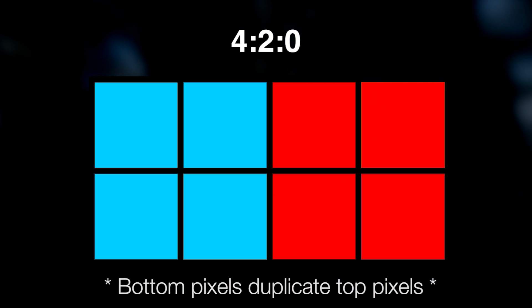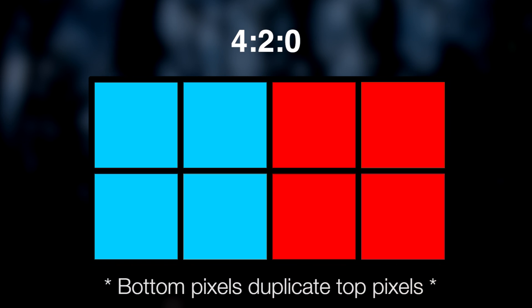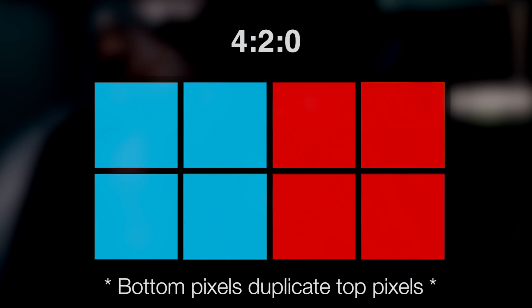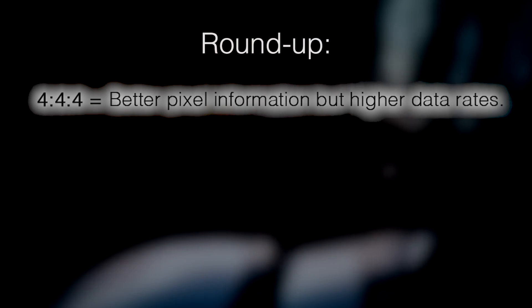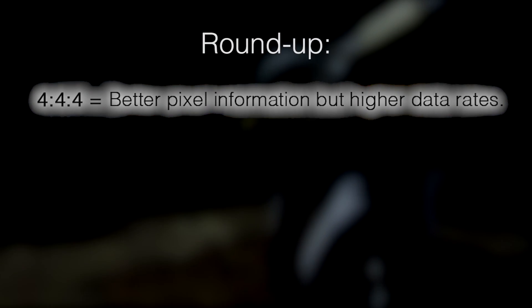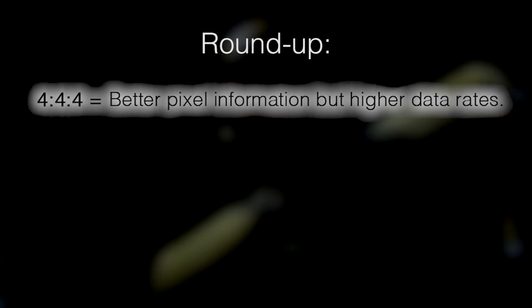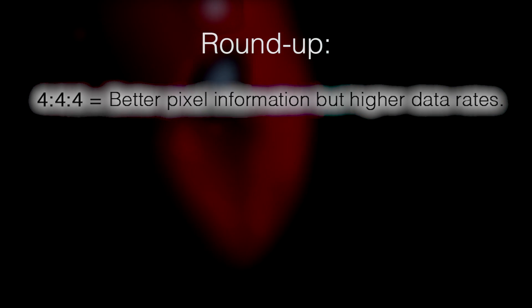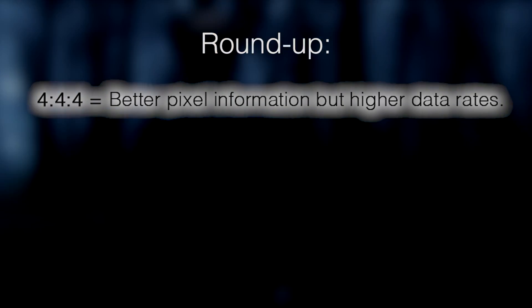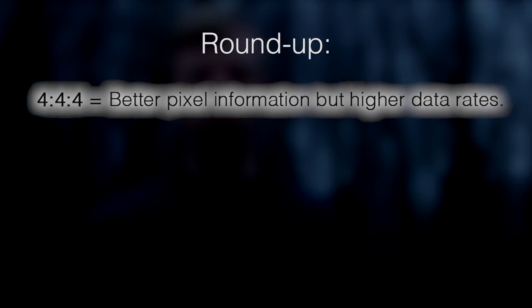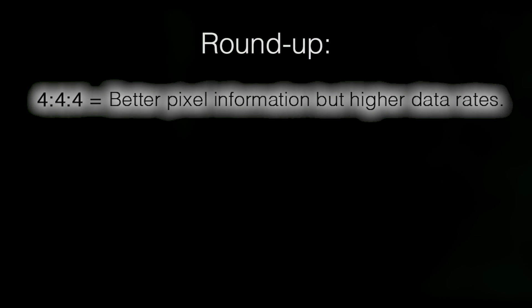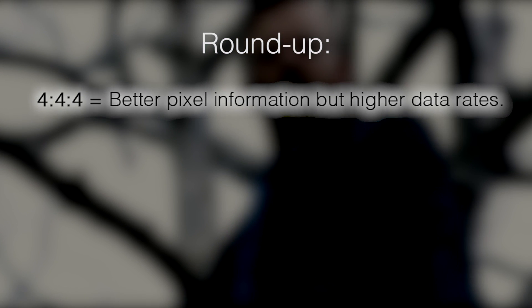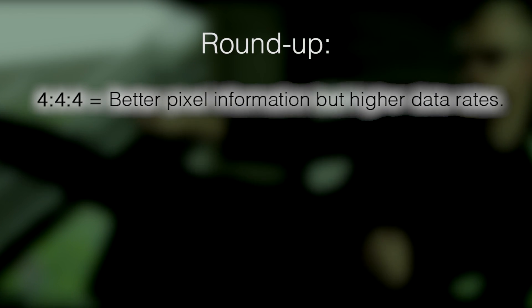So it sounds complicated when you break it down like that, but it's actually quite simple. To round it off, 4:4:4 is going to give you the best information, so when you come to anything like chroma keying it's obviously going to give you a much cleaner key after you've applied the effect — but it does give you higher data rates, which means much larger files.